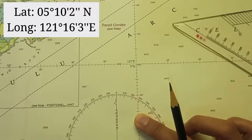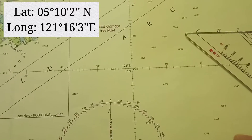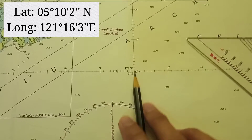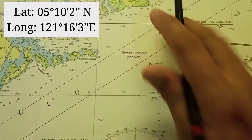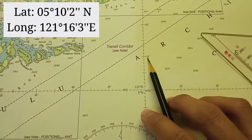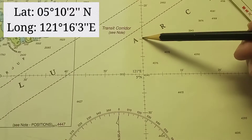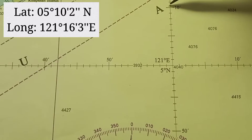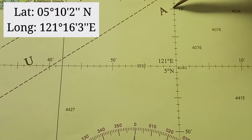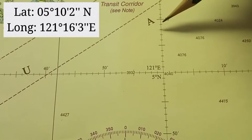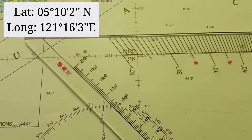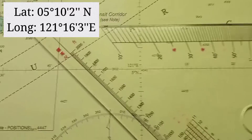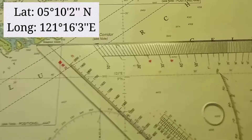Since the latitude is a vertical line, let's focus here. Since it's 5 degrees, you have to find the 5 degrees. So 5 degrees here, and then the 10 minutes — where's the 10 minutes? Five degrees, 10 minutes here. Since it's North, going up. So 10 minutes, and 2 seconds — somewhere here. Let's make a line here. Good line — okay, we are done with the latitude.